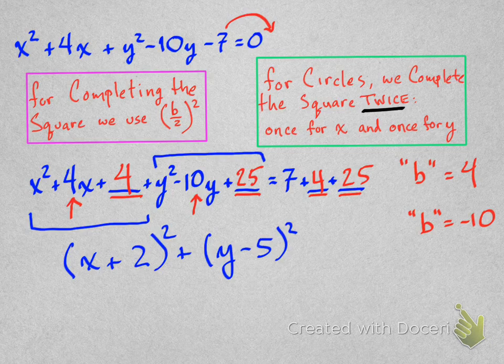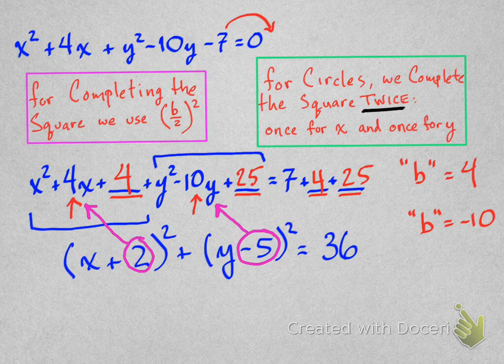Now, just as another reminder, we get that 2 there and the negative 5 from half of b, all right? It's always half of the original b in the equation. So you don't really have to think about the factoring stuff too much. It is pretty mechanical and straightforward, and it always happens the same way. The other side of the equation equals 36.